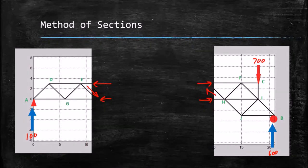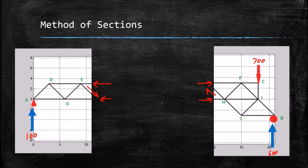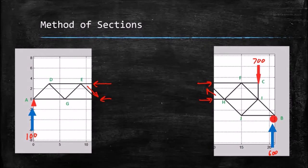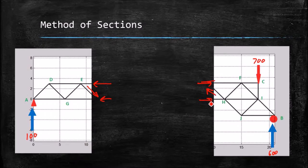And on the right, you get to see the same, essentially the same thing, where my assumption of compression gives me a force to the right here, a force upwards there, and a force to the right there.